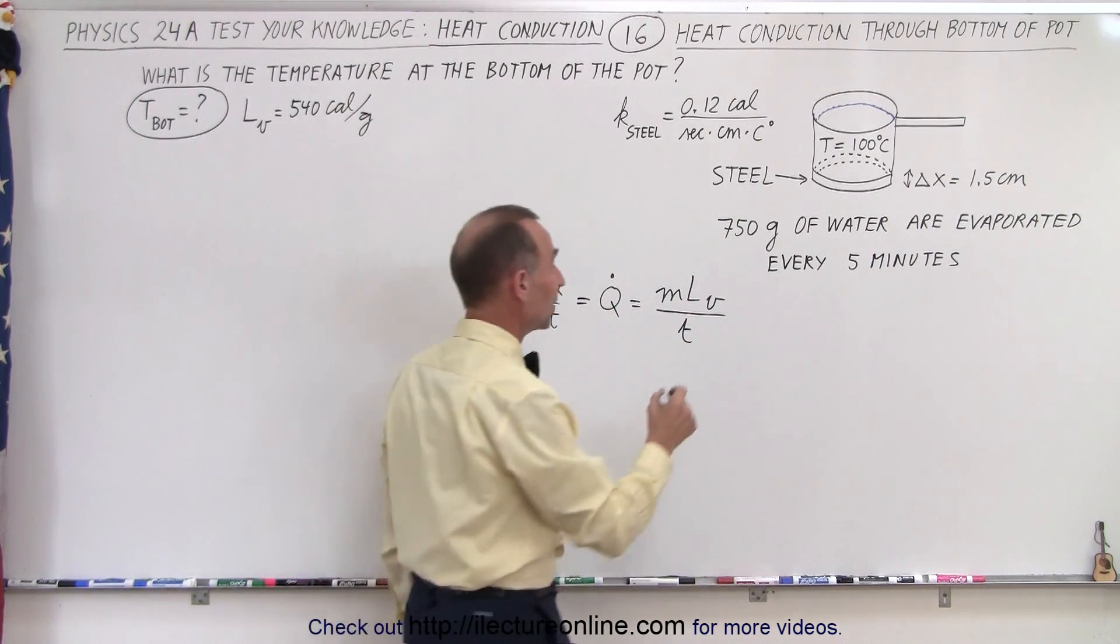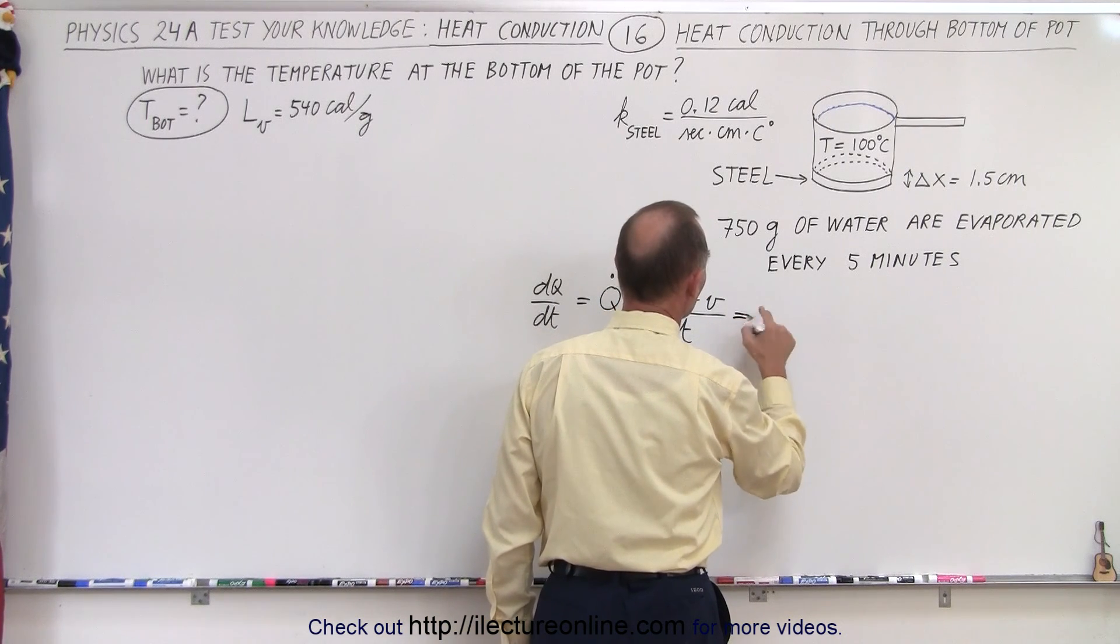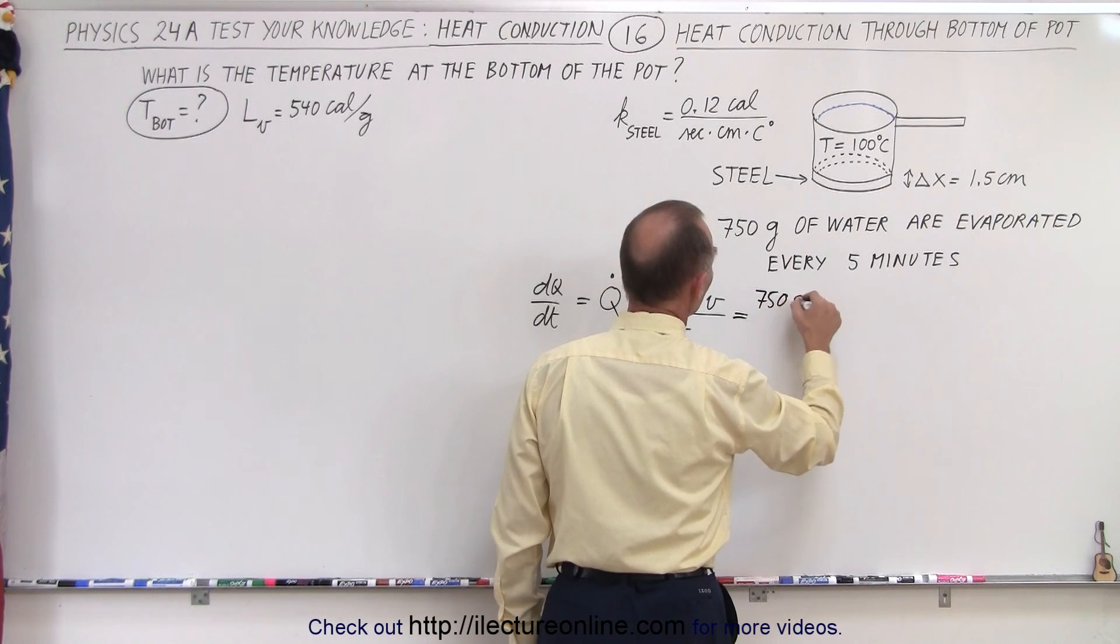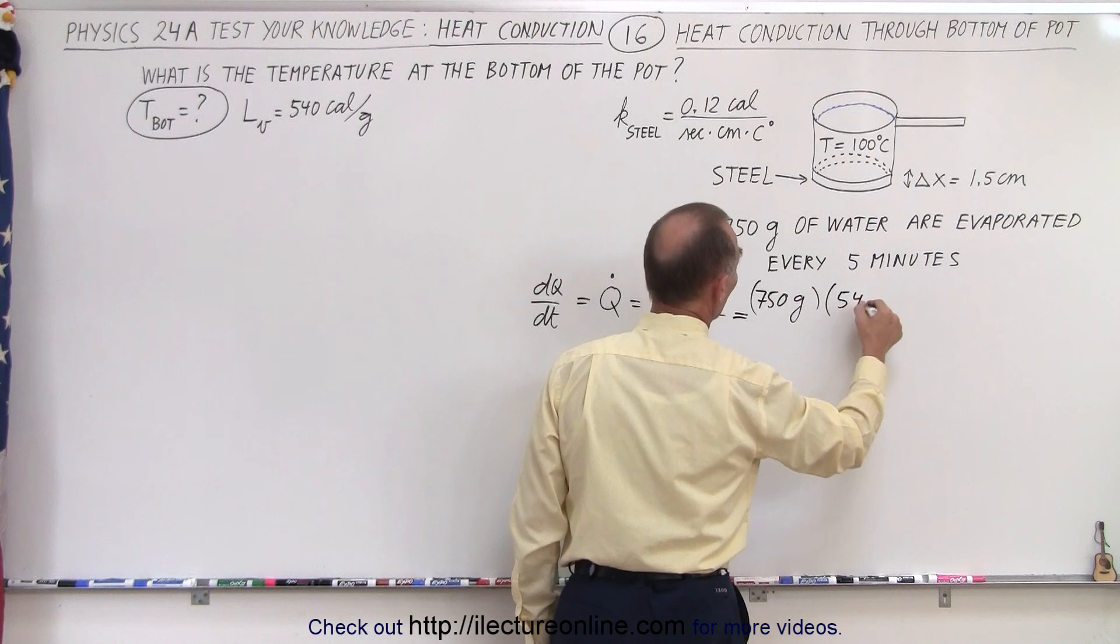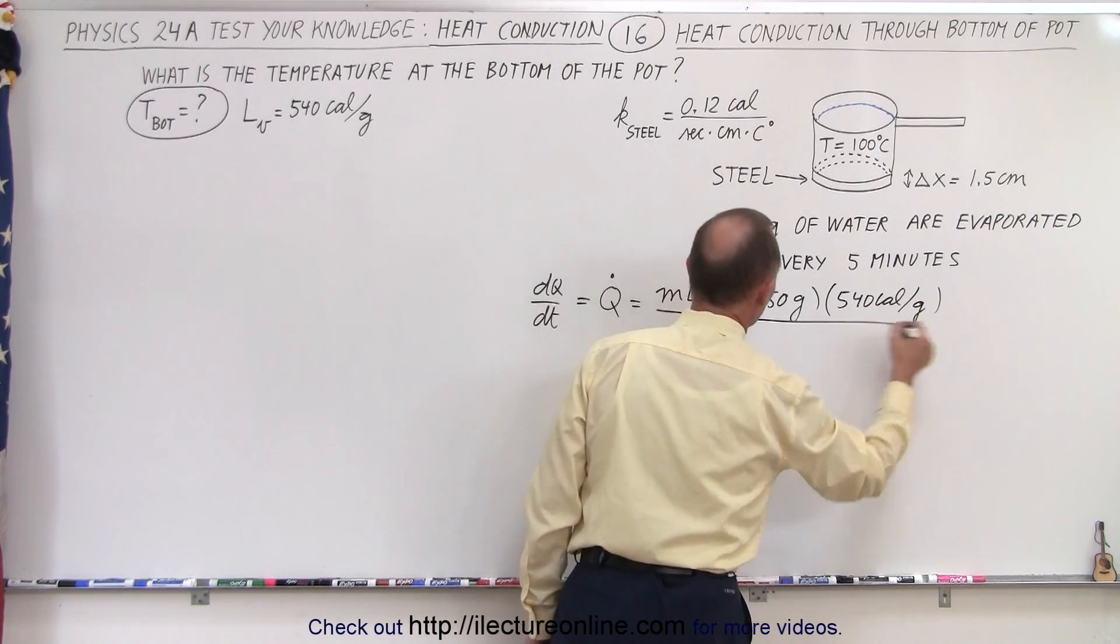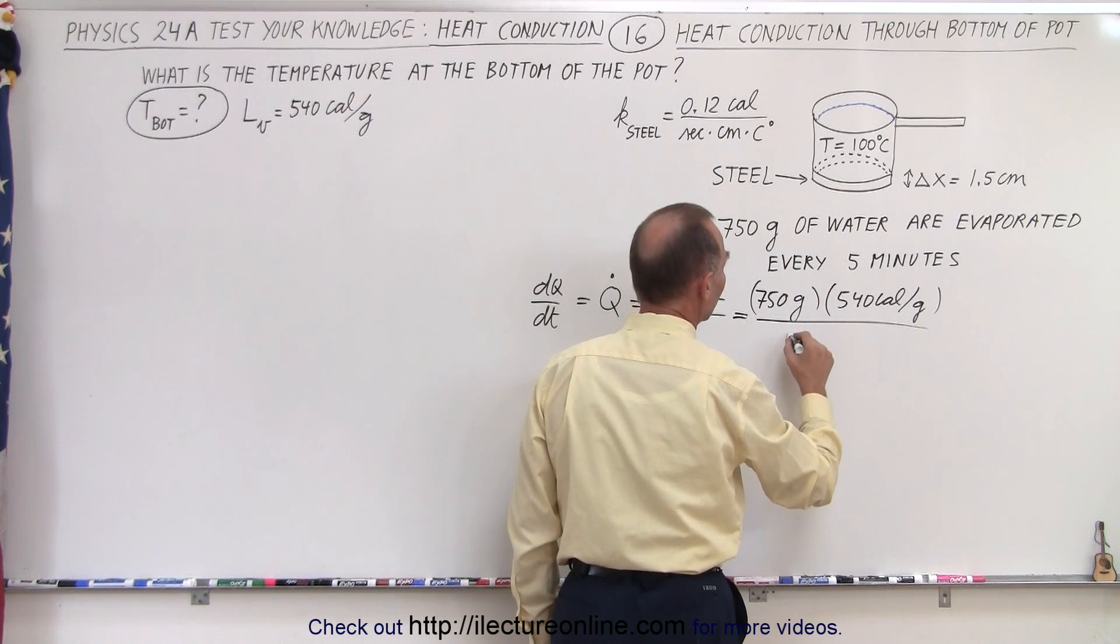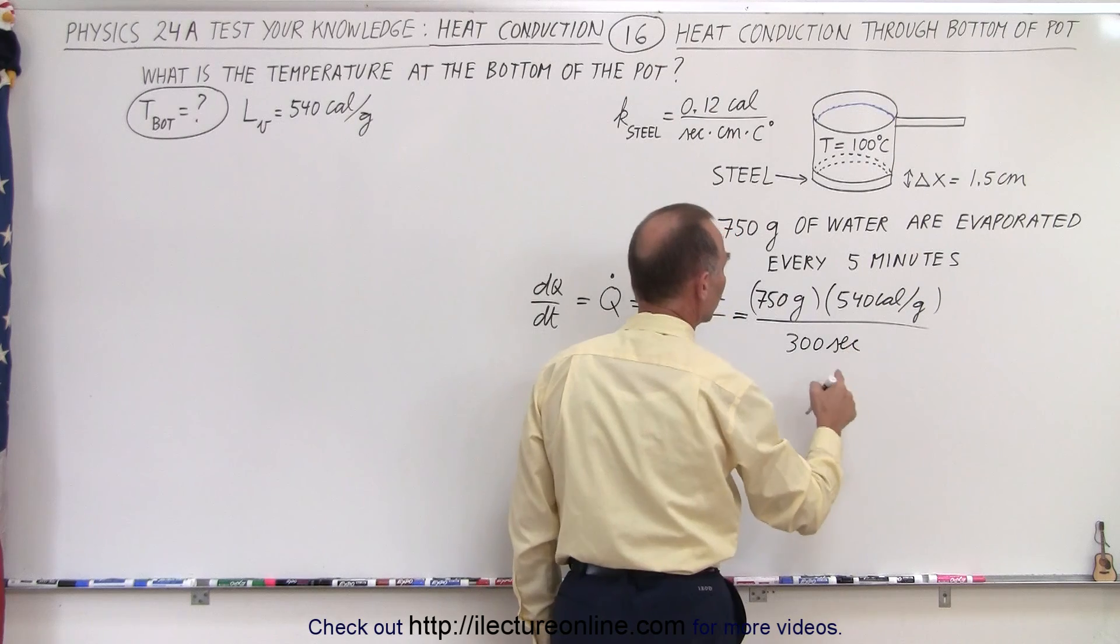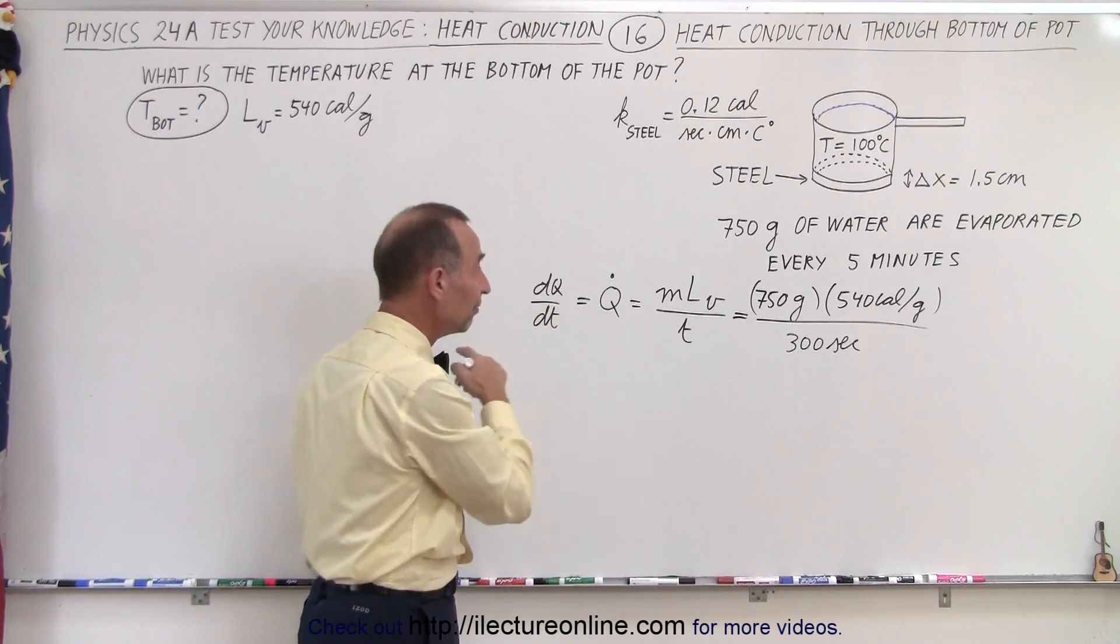And that's the amount of heat per unit time. So the mass is 750 grams. This is 750 grams multiplied times the latent heat of vaporization, which is 540 calories per gram, all divided by the time. And the time is going to be 5 minutes. So 5 minutes is equal to 300 seconds. So notice that grams cancel out. This is going to be calories per second for the heat flow.